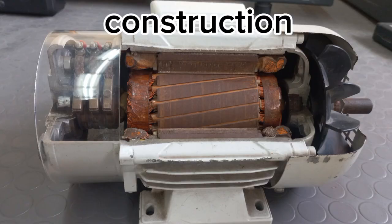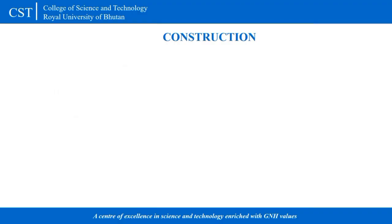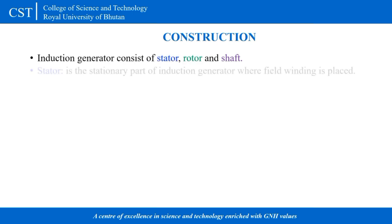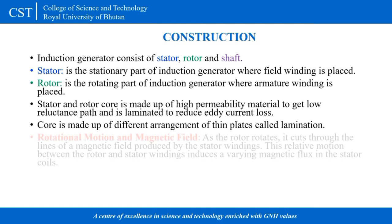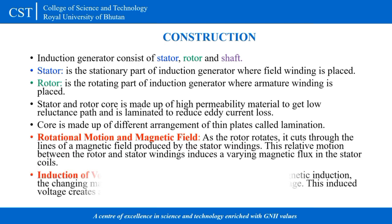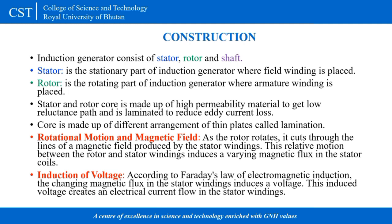An induction generator consists of a stator, rotor, and shaft. The stator is the stationary part where the field winding is placed, and the rotor is the rotating part where the armature winding is placed. The stator and rotor cores are made of high-permeability material to provide a low-reluctance path, and are laminated using thin plates to reduce eddy current loss.